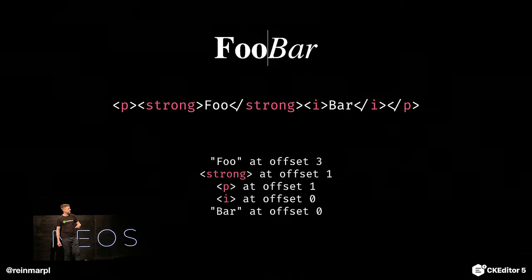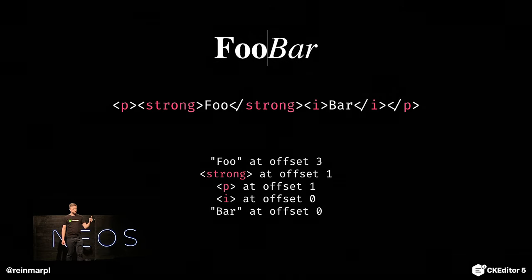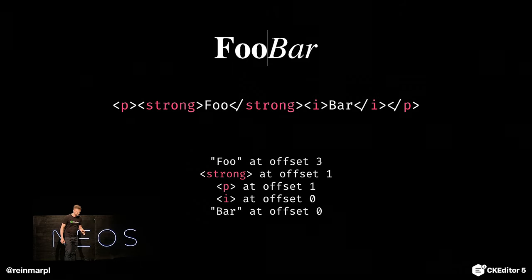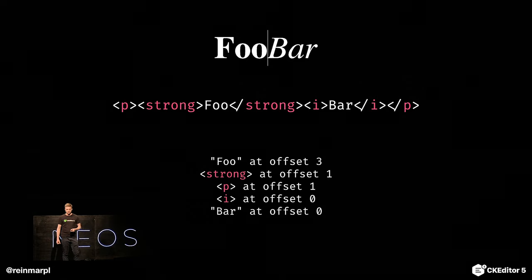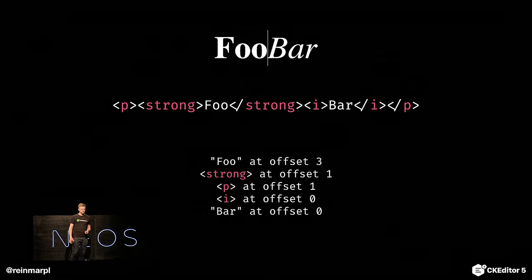Let's see some examples. Here is a bolded word 'foo' and an italicized word 'bar,' with a caret between those two words. In how many positions in the DOM can this single caret end up? In five. It can be in the text node 'foo,' in the text node 'bar,' in the strong element, in the I element, and in the paragraph. So you have to account in your code for all those situations.